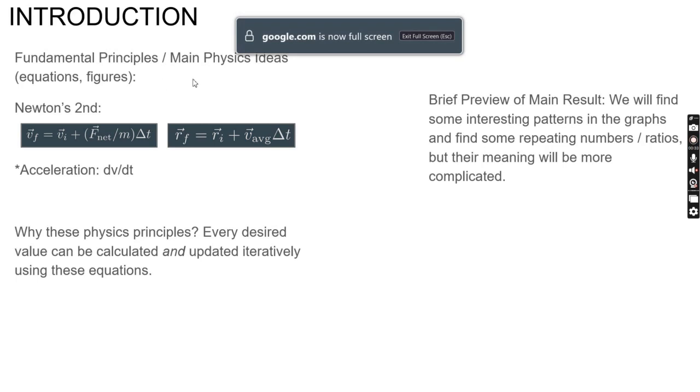Main physics ideas: Newton's second law for position and velocity, goes deeper to acceleration, and some other complicated stuff. Why these principles? It has to do with getting position over time.